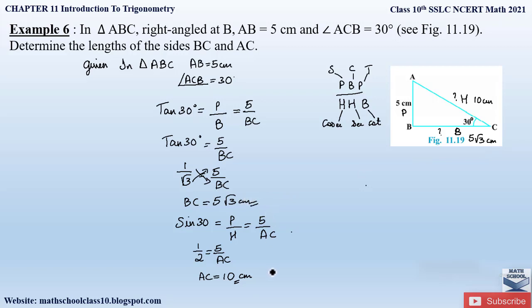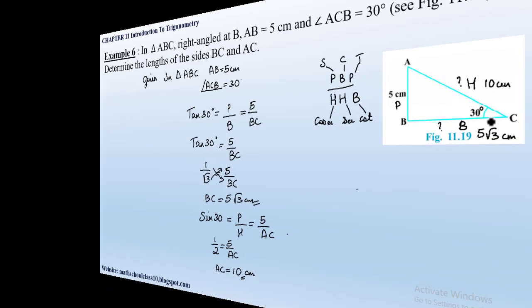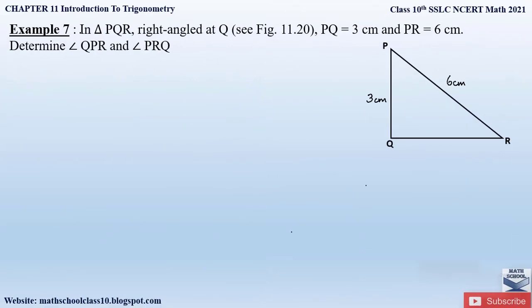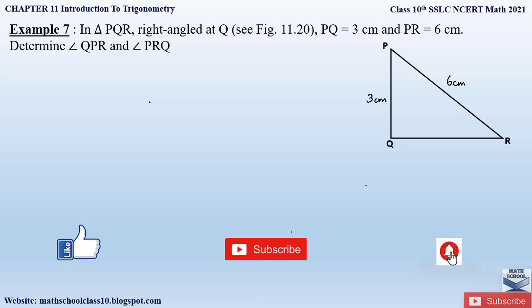This is how we solve these kinds of problems: according to the side we need to determine, we apply the appropriate trigonometric function to the acute angle given. In my next video I'll be solving Example 7 from Chapter 11. Do like the video, subscribe to the channel, and hit the bell button for the latest updates as I complete the whole syllabus for Class 10.